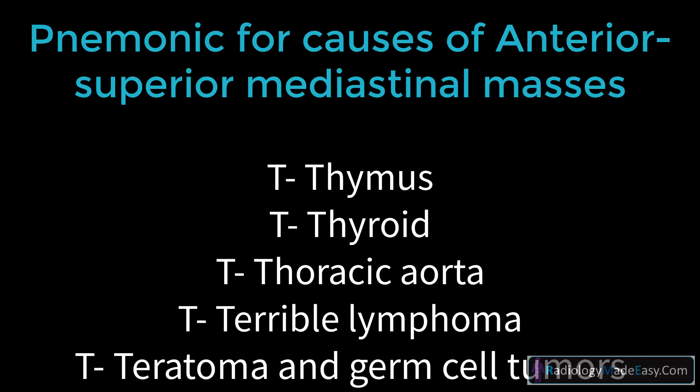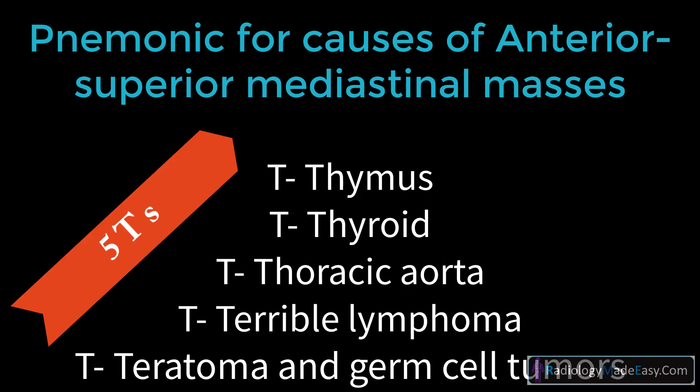The common causes of an anterior superior mediastinal mass can be remembered using the mnemonic of the Five T's: Thymus, Thyroid, Thoracic aorta, Terrible lymphoma, and Teratoma and germ cell tumors.